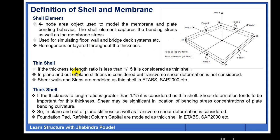For thin shell: if the thickness-to-length ratio of an element is less than 1/15, then it is considered as thin shell. The in-plane and out-of-plane bending stiffness is considered, but the transverse shear deformation is not considered in case of thin shell. Shear walls as well as slabs are modeled as thin shells in finite element software such as ETABS, SAP2000, etc.